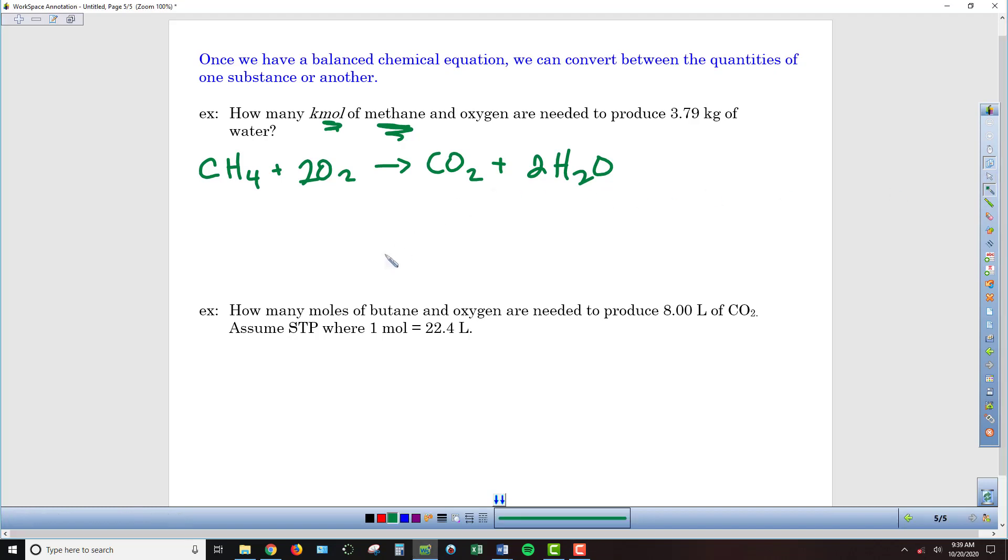I'm going to start with the 3.79 kilograms of water. I'm going to need to convert that to moles, since this is a molar equation. So I've got 1 kilomole of the water. I need the molar mass of the water, which hopefully we know from 1 kilogram per mole of hydrogen plus 16 for oxygen. So we have a total of 18 kilograms of water per kilomole of water.